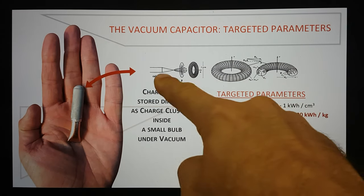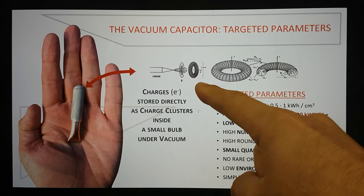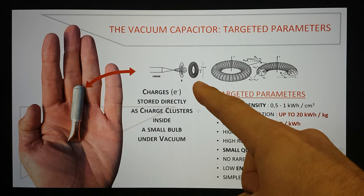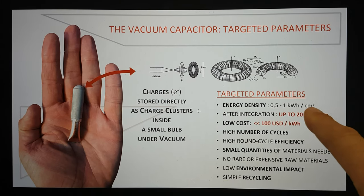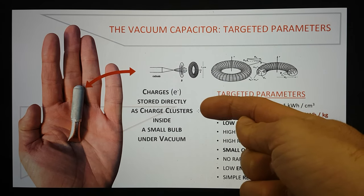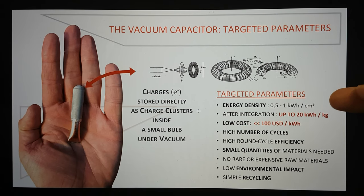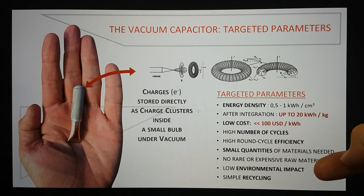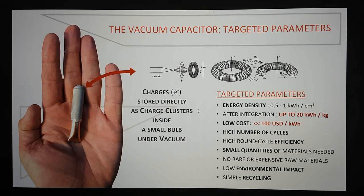It's got this Mark Twain quote that many have used: They did not know it was impossible, so they did it. Here is apparently their current version of their vacuum capacitor. I immediately recognize these drawings. These drawings come from Hal Fox who bought the original patents from Ken Shoulders. They're saying charges E- stored directly as charge clusters inside a small bulb under vacuum. These are the targeted parameters: Energy density of 0.5 to 1 kilowatt hours per cm cubed. After integration, up to 20 kilowatt hours per kilogram. Low cost is less than 100 US dollars per kilowatt hour. High number of cycles, high round cycle efficiency, small quantities of materials needed, no rare or expensive raw materials, low environmental impact, and simple recycling. It ticks a lot of boxes there.